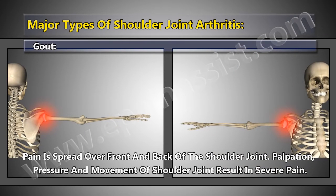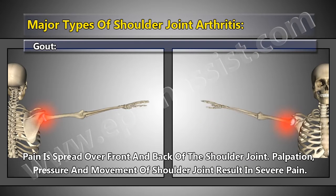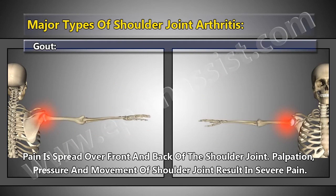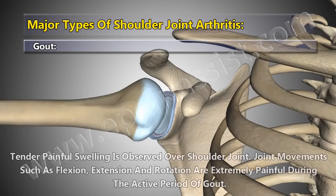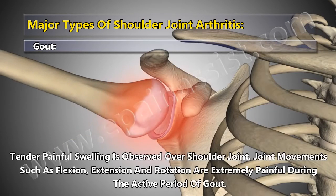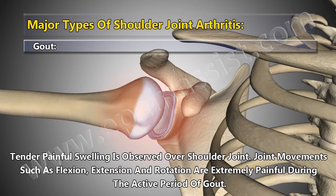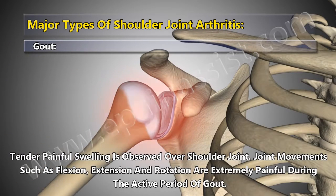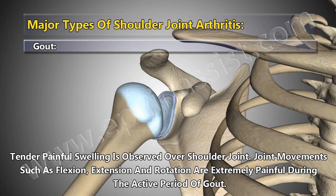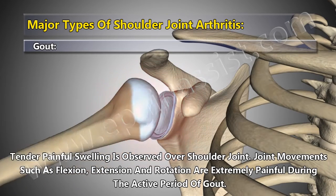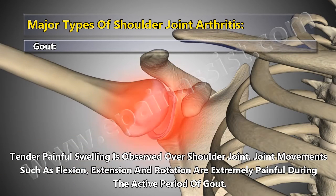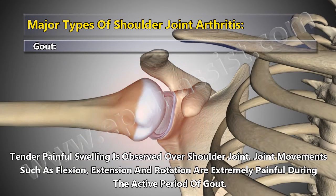Pain is spread over the front and back of the shoulder joint. Palpation, pressure, and movement of the shoulder joint result in severe pain. Tender, painful swelling is observed over the shoulder joint. Movements such as flexion, extension, and rotation are extremely painful during the active period of gout.